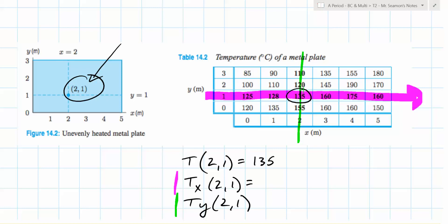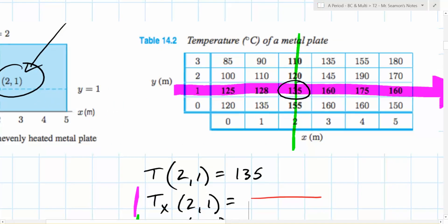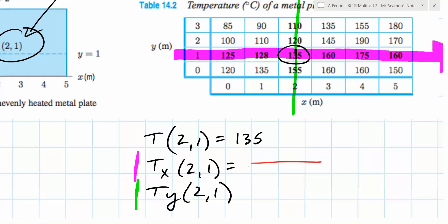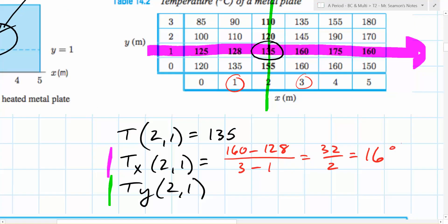So you're doing the rate of change of the temperature with respect to x, so x is changing. So if it's the rate of change of temperature for this one, what difference should I put on top? What subtraction do I do on top? 160. Yep, minus. And then what's on the bottom? What subtraction is on the bottom? 3 minus? Nope. Remember, we're going right before or right after, so it's 3 minus what? 1. So this is 32 over 2, so it's what? 16.